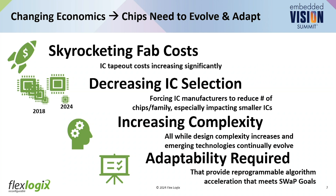That's intersecting right now with the moment where all of our IP is increasing in complexity — not just our algorithms for AI, but also cryptography and security. That leaves you with fewer chips to choose from, more expensive to build, pushing us towards a moment where adaptability is becoming more and more important.